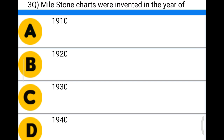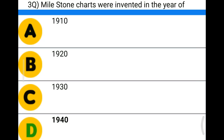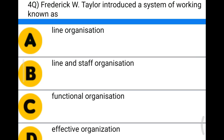Next question: milestone charts were invented in the year of — Option A: 1910, Option B: 1920, Option C: 1930, Option D: 1940. The correct answer is Option D, 1940. Next question: Frederick W. Taylor introduced a system of working known as —